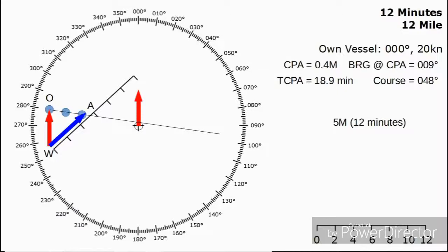We can then measure their length and use that to work out their speed. We can see the length of the vector is 5 miles according to our scale. We know they've done that in 12 minutes, so we simply multiply up by 5 to find they covered 25 miles in 60 minutes, which gives us a speed of 25 knots.